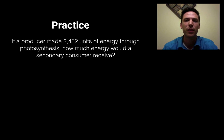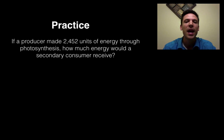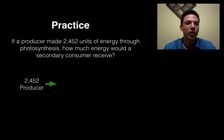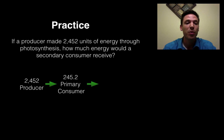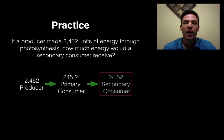Let's try a practice problem. If a producer made 2,452 units of energy through photosynthesis, how much energy would a secondary consumer receive? Pause the video and try it out. If a producer produced 2,452 units of energy, our primary consumer gets 10% of that — so 245.2 units of energy, moving the decimal over once. Going to our secondary consumer, move the decimal over one more time: that's 24.52 units of energy. It's a lot less than what we started with because only 10% moves on each level.